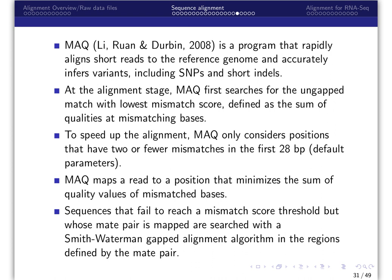To speed up the alignment, MAC only considers positions that have two or fewer matches in the first 28 base pairs. Those are default parameters. MAC then maps a read to a position that minimizes the sum of the quality values of mismatched bases. Sequences that fail to reach a mismatched score threshold, but whose mate pair is mapped, are searched with a Smith-Waterman gapped alignment algorithm in the regions defined by the mate pair.